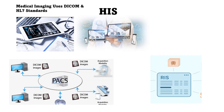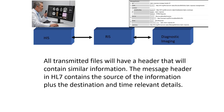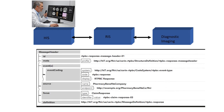The interface of both the PACS and RISC system with the Hospital Information System is what the radiographer or medical imaging professional needs to understand. All transmitted files will have a header that will contain similar information. The message header in HL7 contains the source of the information, plus the destination, and relevant details.